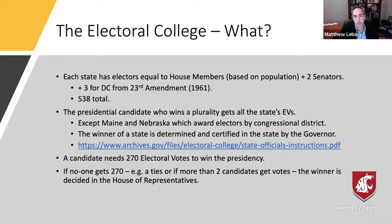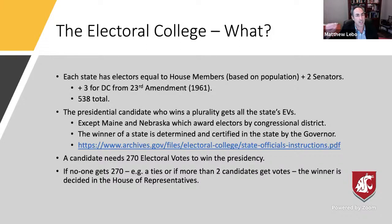Maine and Nebraska award electors by congressional districts, so it's a little bit more complicated there. The winner of a state is determined and certified by the governor, and then that determines which slate of electors' votes will count when they're tallied in Washington, D.C. If no one gets 270 electoral votes — for example, if there's a tie of 269 to 269, which is mathematically possible this year — or if more than two candidates get electoral votes, then the decision goes to the House of Representatives. Each state delegation gets one vote. At the moment Republicans would have an advantage on that tiebreaker, but if Democrats can win back two House delegations — I think in Michigan and Pennsylvania — they'd have the majority of state delegations.